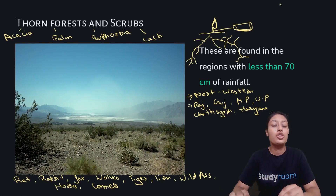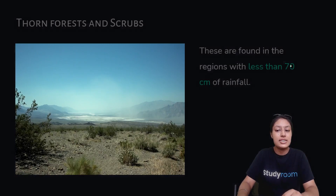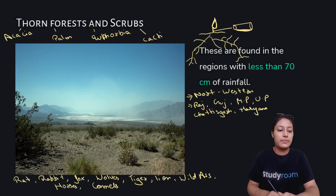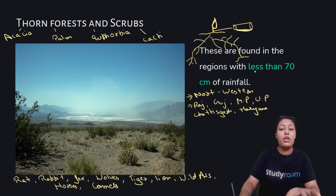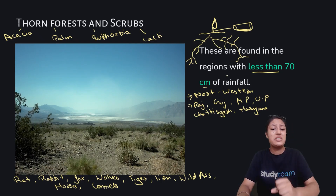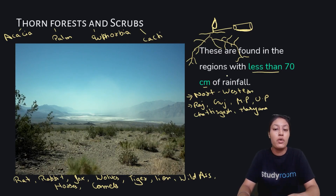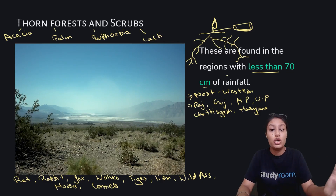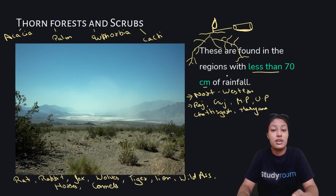Next we will understand about thorn forest and scrubs. Thorn forests and scrubs are found in regions where the rainfall is less than 70 centimeters, meaning rainfall is very, very low — it barely rains. These forests are found mostly in the northwestern region of India — majorly Gujarat, Rajasthan, Madhya Pradesh, Uttar Pradesh, etc. The kinds of trees we get there are acacia, palm, euphoria, and cacti.